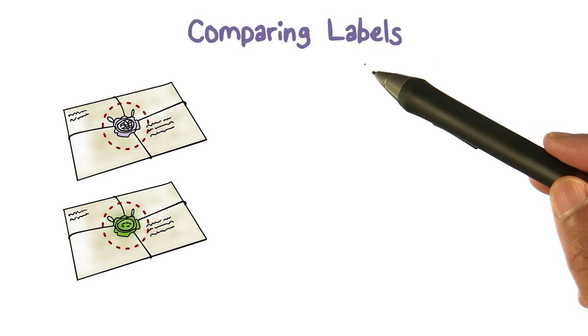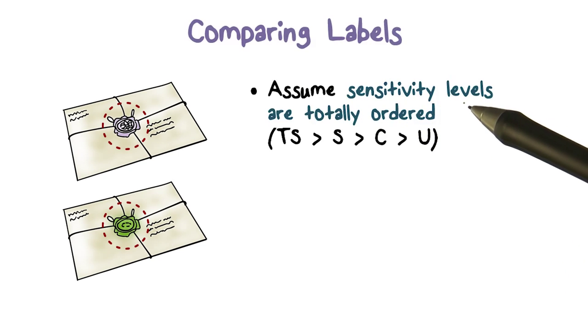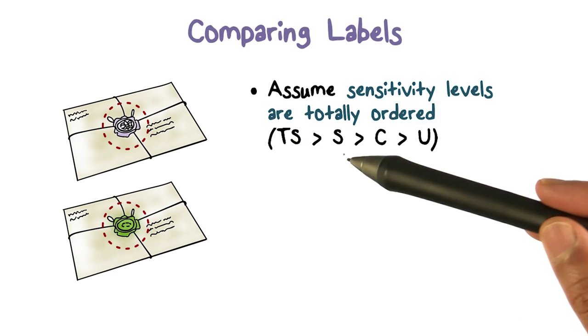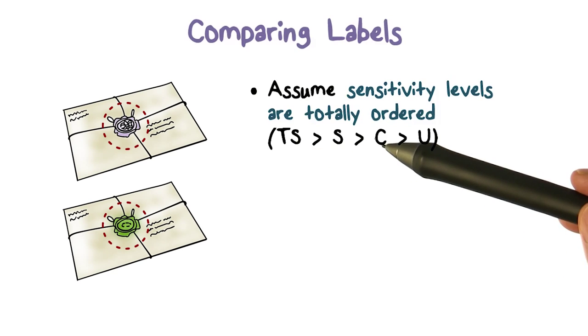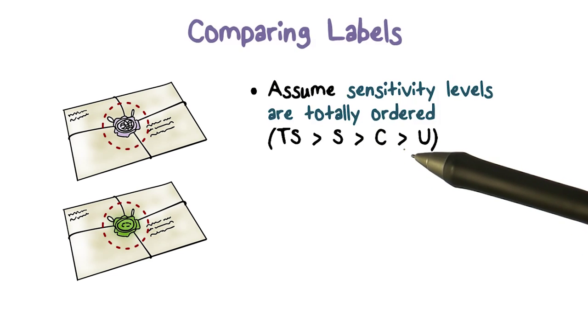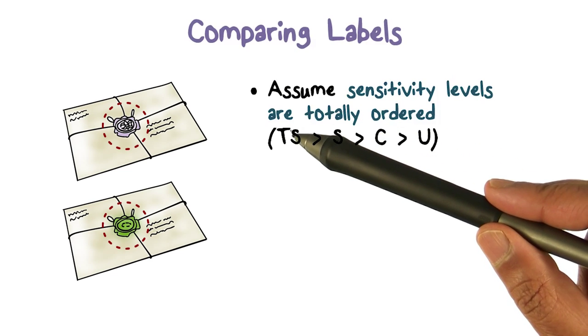Here we're going to explore how that comparison might work. Let's talk about labels of the type we discussed in the context of the military intelligence community. Sensitivity refers to how sensitive data is. We said that top secret is the most sensitive, secret is the next level, then classified and unclassified. I'm picking these four examples.